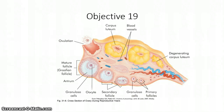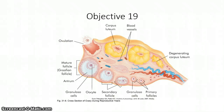Remember that fertilization occurs in the fallopian tube — typically the upper third portion. That wraps up our overview of anatomy and physiology of the female reproductive system. If you have questions, please bring them to class, stop in, or email us so we can get your questions answered.